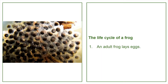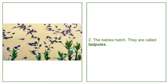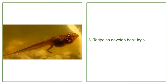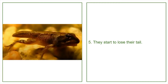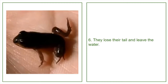The life cycle of a frog: one — an adult frog lays eggs; two — the babies hatch and are called tadpoles; three — tadpoles develop back legs; four — then they develop front legs; five — they start to lose their tail; six — they lose their tail and leave the water.